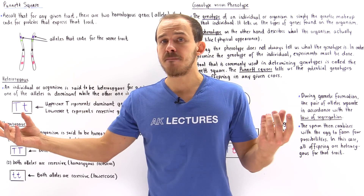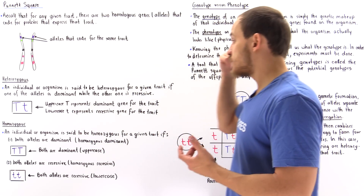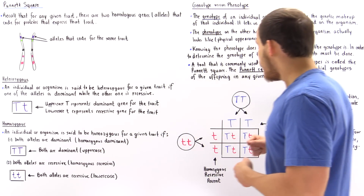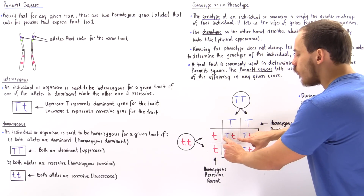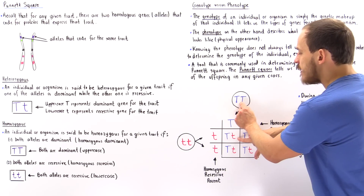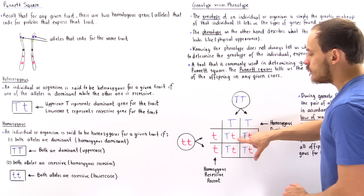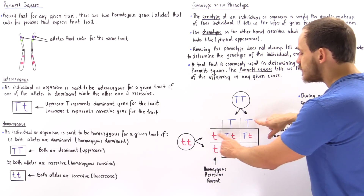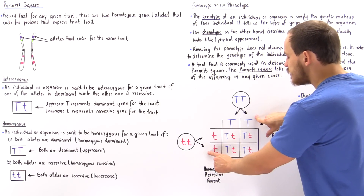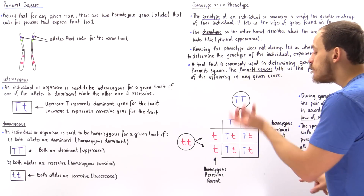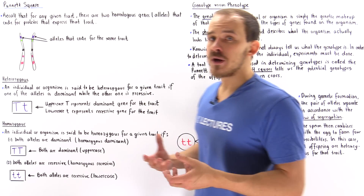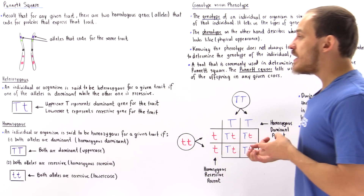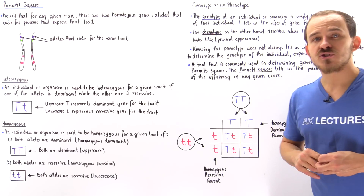We have a haploid number from each parent fusing to form a diploid, and these chromosomes combine. There are four possible offspring combinations: uppercase T with lowercase t, T with t, t with T, and t with t. Because these fusion processes are arbitrary and random, there is a 25% chance that each of these will actually take place.